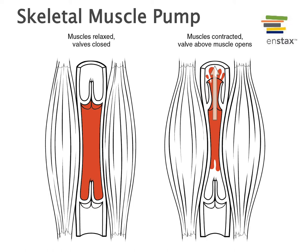The valves inside veins enable a skeletal muscle pumping function. When a skeletal muscle contracts, it squeezes on the blood in a vein deep to that muscle, increasing pressure in the compartment of that vein between two valves. This increased pressure forces blood toward the heart through the valve. Because blood cannot go backwards, the valve prevents backflow, and so in the leg blood is forced up toward the heart.